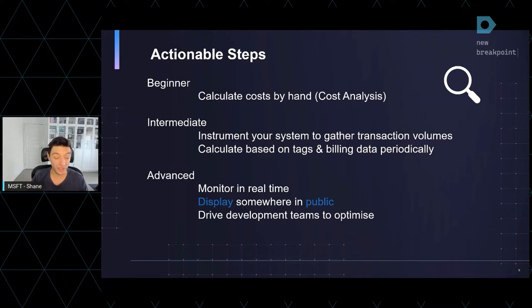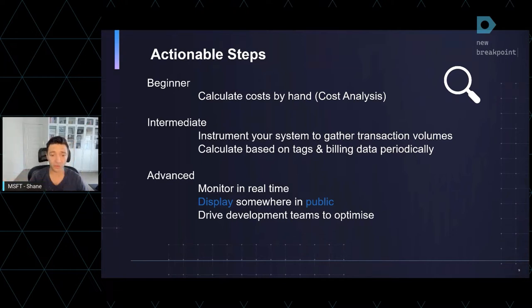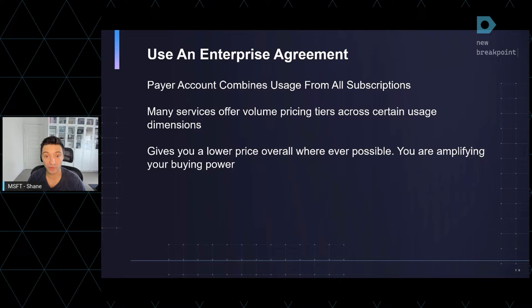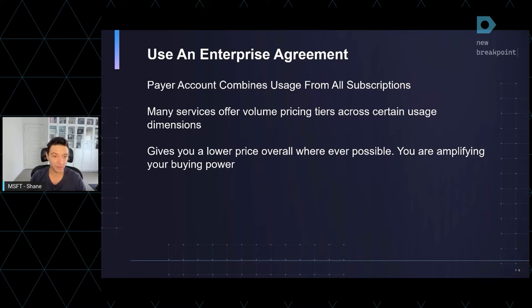Move off pay-as-you-go to an enterprise model — an enterprise agreement. It offers built-in savings ranging from 15% to 45% based on a committed spend. These commitments work on the principle that the more you buy, the better your discount. So rather than having your subscriptions everywhere, moving into an enterprise agreement is effectively amplifying your buying power.